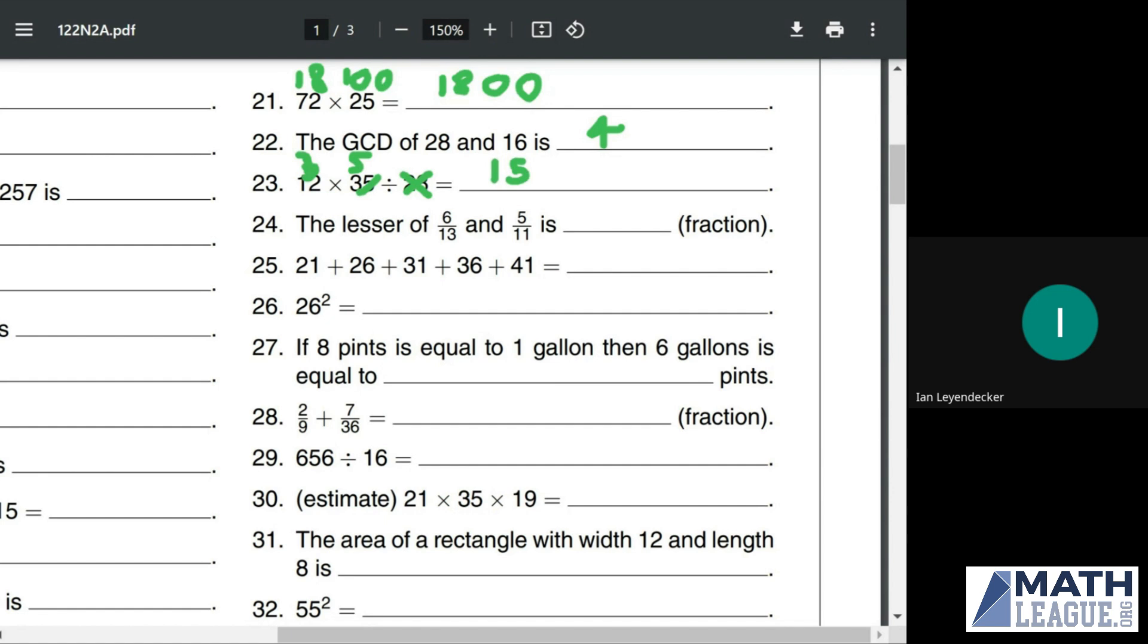The lesser of 6 thirteenths and 5 elevenths is blank. We can solve this by cross multiplying. If we multiply both sides by 11, then this denominator becomes 66. If we multiply both sides by 13, this numerator becomes 65. 65 is less than 66, so 5 elevenths is less than 6 thirteenths.